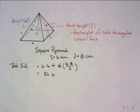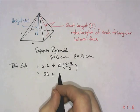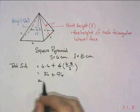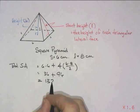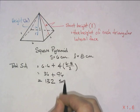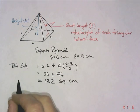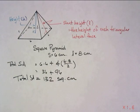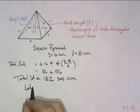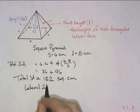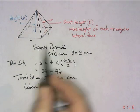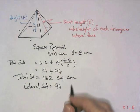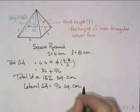So the surface area, and I'll say total, is going to be 36 plus 4 times 48 divided by 2. What is that going to be? That's 96 here. And so add those together, and that's 132 square centimeters. So that's the total surface area. And once again, if we were talking about lateral surface area, the lateral would only be the part of the four triangles. And so that would be this part here of the 96 square centimeters.